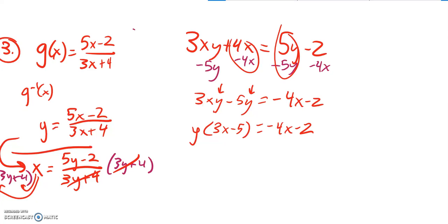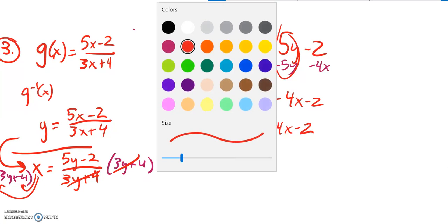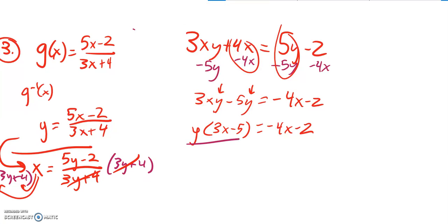So now I have y times something equals something else. So what I can do is divide by that something. And I'm there. I found the inverse because that divides out.